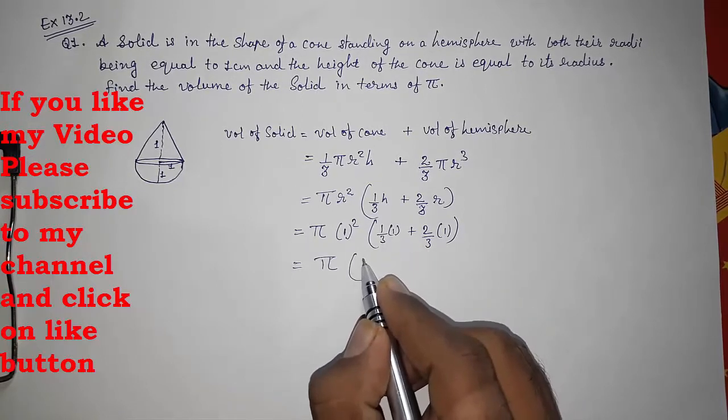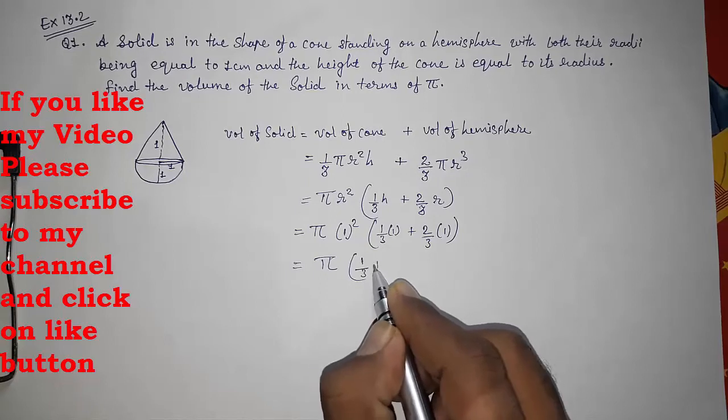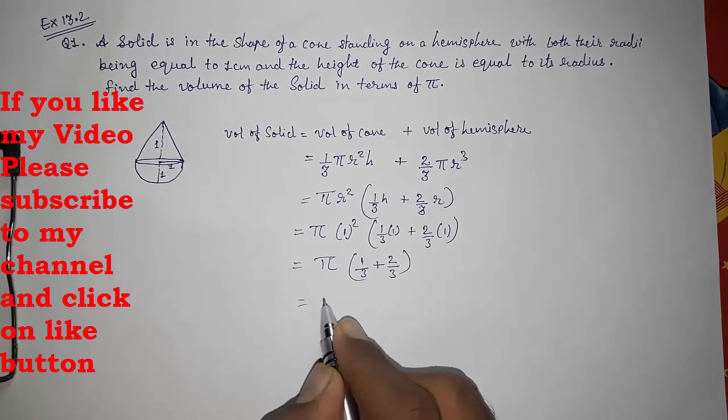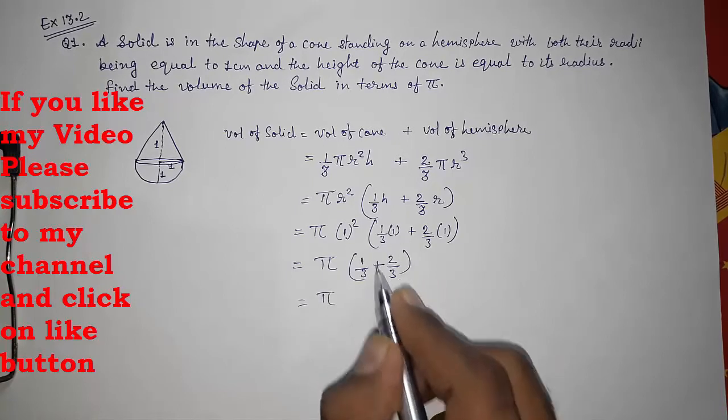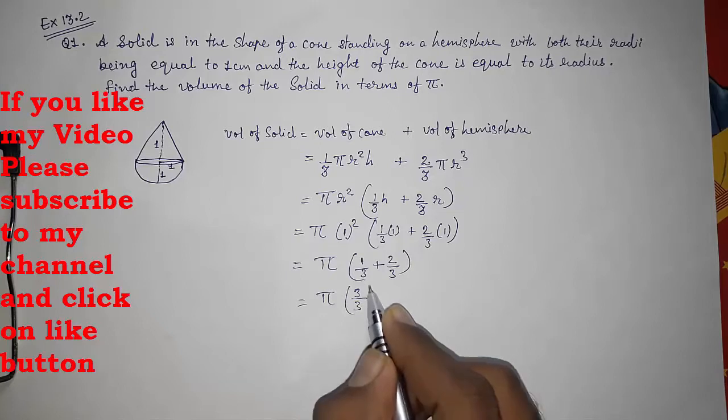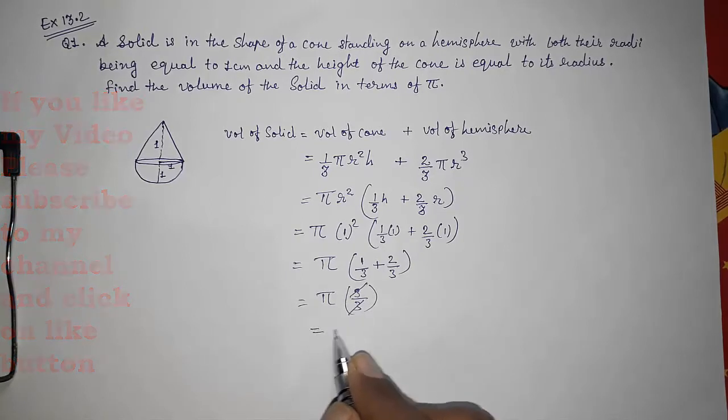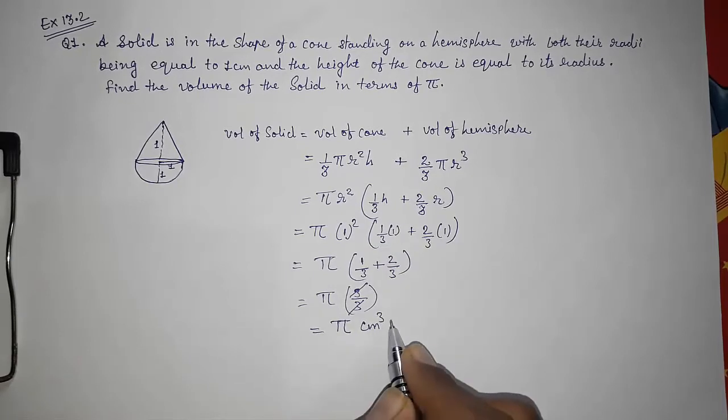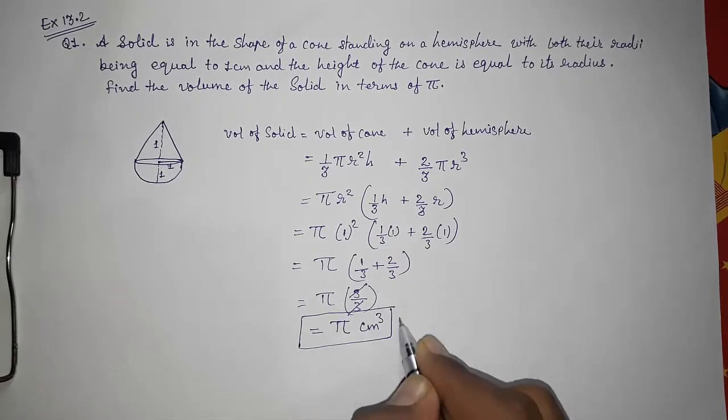Here 1/3 × 1 = 1/3 plus 2/3 × 1 = 2/3. So we get π times, here the denominator is same, so we will get (1 + 2)/3 = 3/3. So it will get cancelled. So our answer is π cm³. It is volume, that's why cm³.